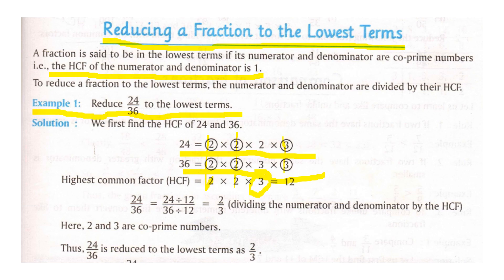Now what we will do? The given fraction was 24 and 36. So you will divide 24 with 12 and 36 with 12. Finally you will get 2 by 3 as the answer. So 2 by 3 is the reduced form of 24 and 36.